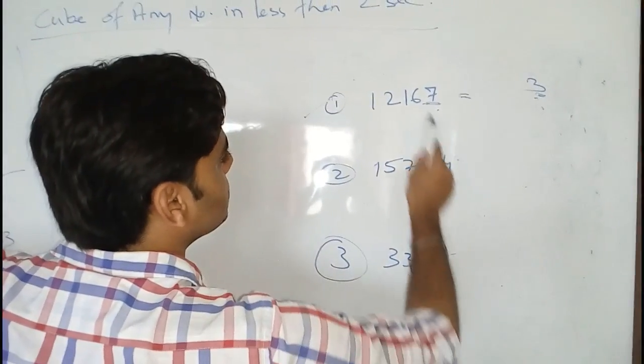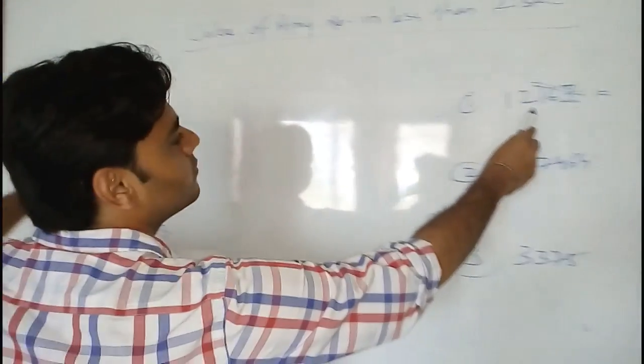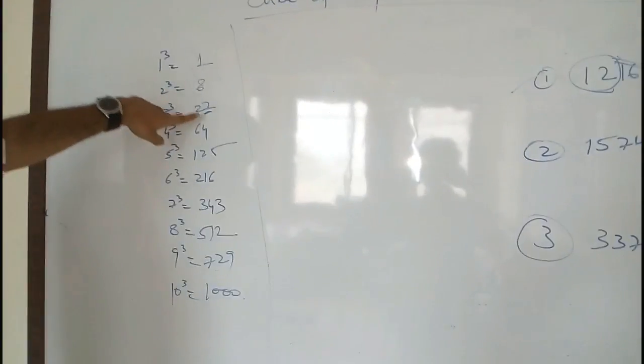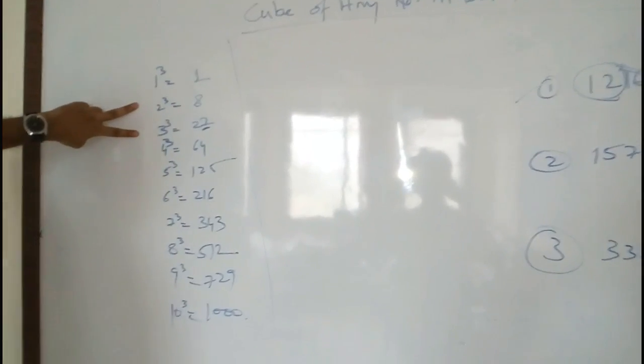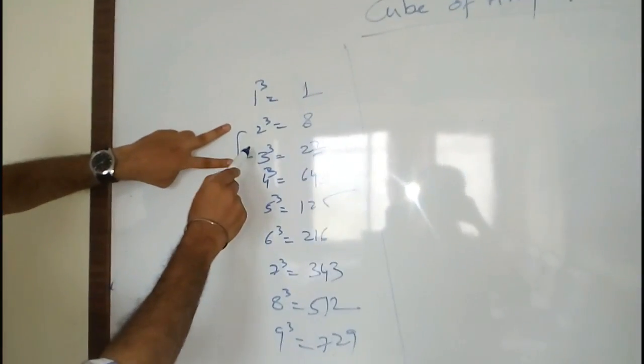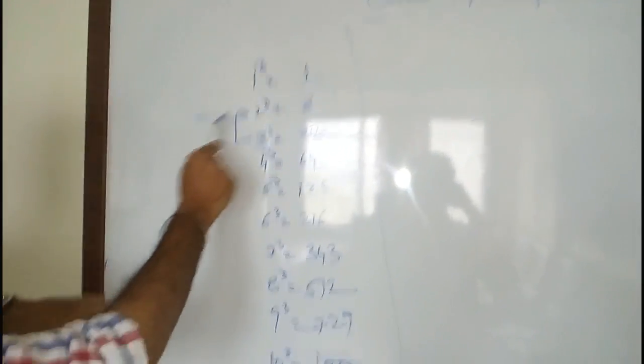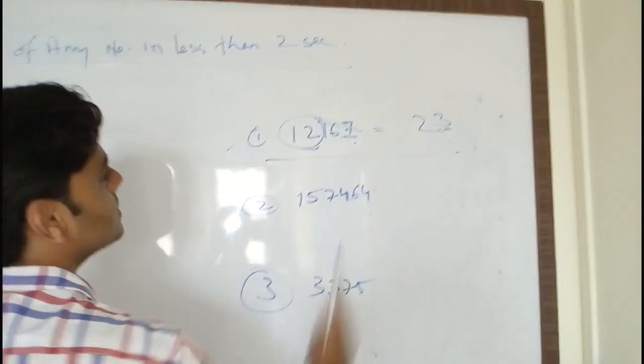After we get the unit place, just ignore the last three digits. Now what is left with us is 12. So 12 comes close to 8 and 27. So always take the number which is less than 12. So it is 2. So answer for this is 23.